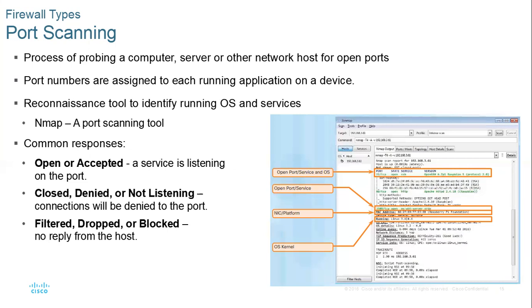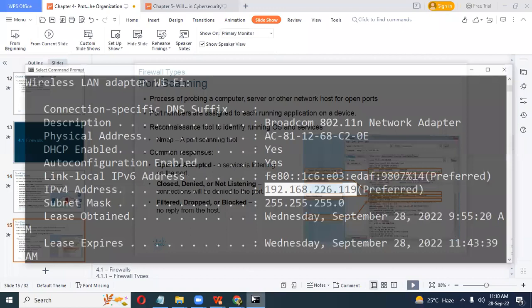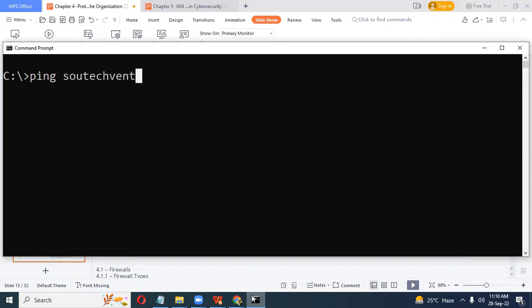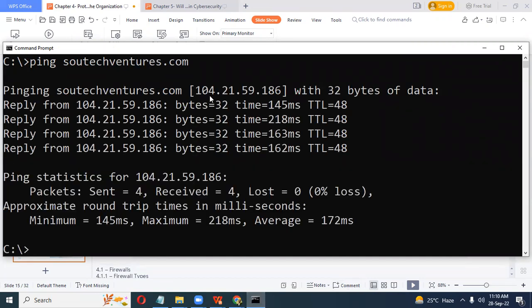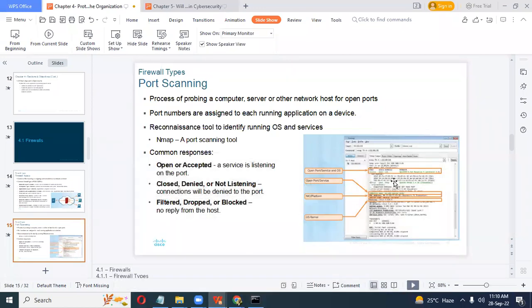The second stage is scanning. At the first stage you might have gathered IP addresses and usernames. You can scan a network — every website is tied to an IP address. For instance, I can ping saltechventures.com and see the IP address mapped to that website. Once I get an IP address, I could run Zenmap to scan the network. I'll do a separate video on how to use Zenmap.